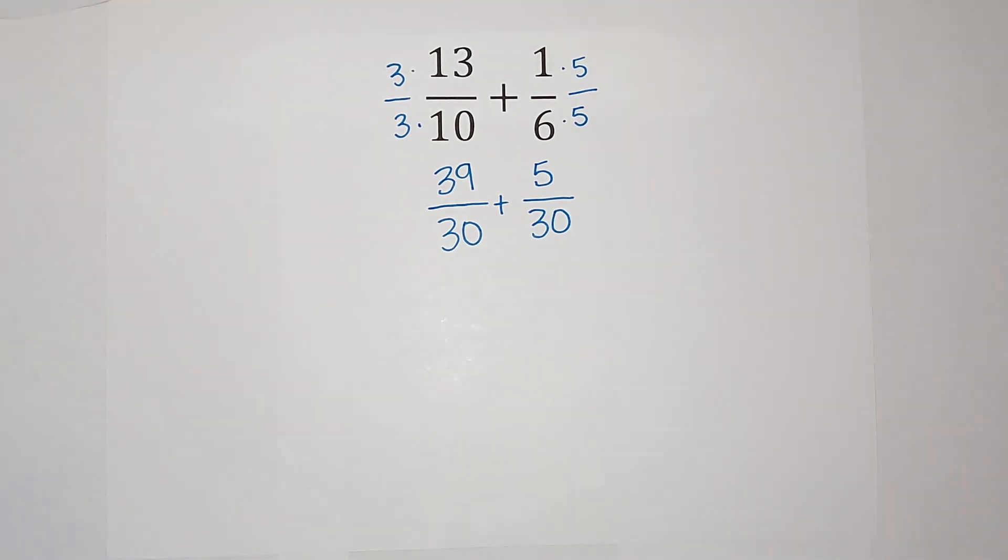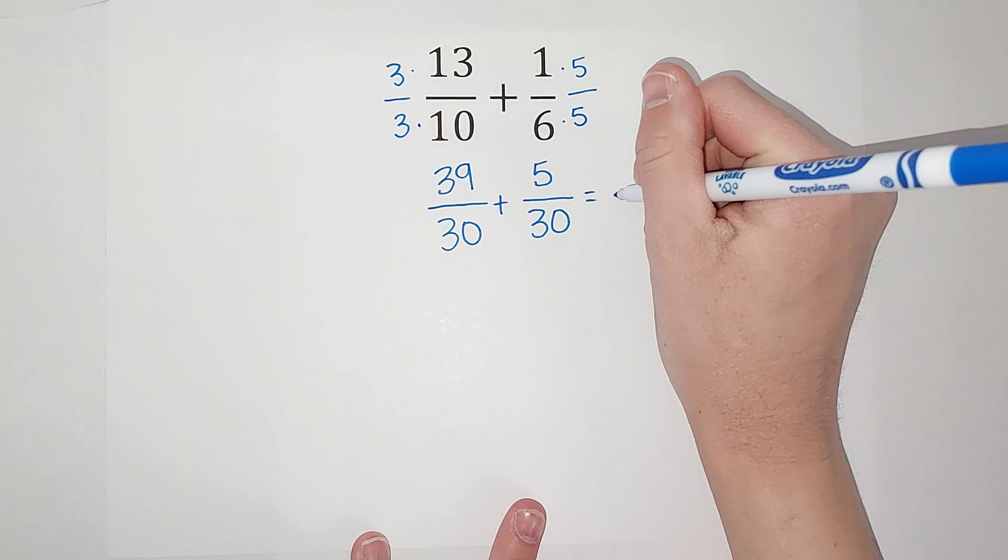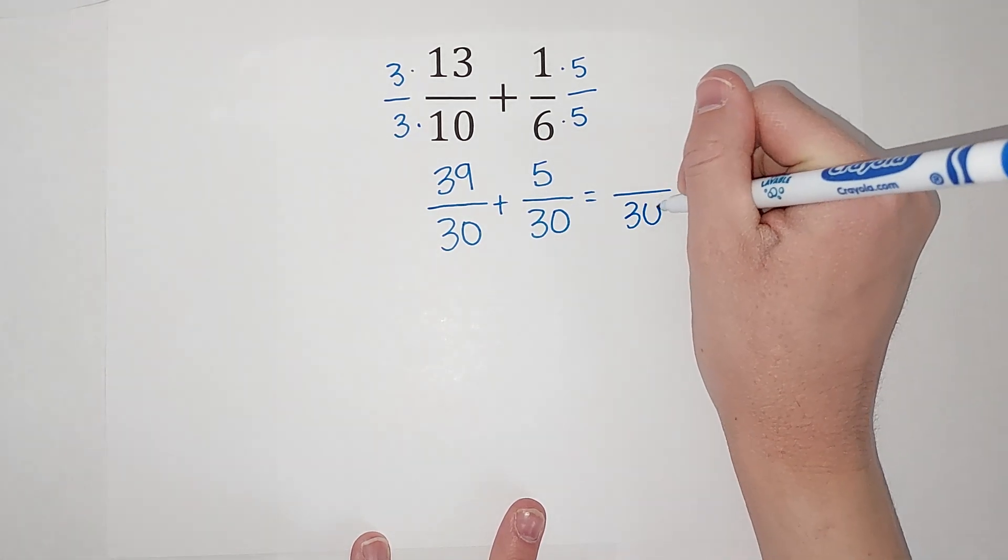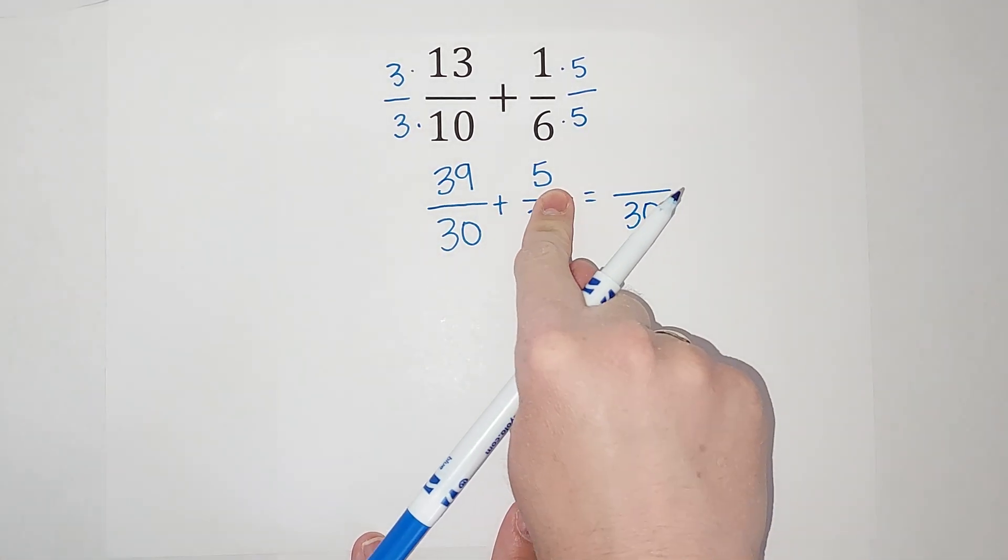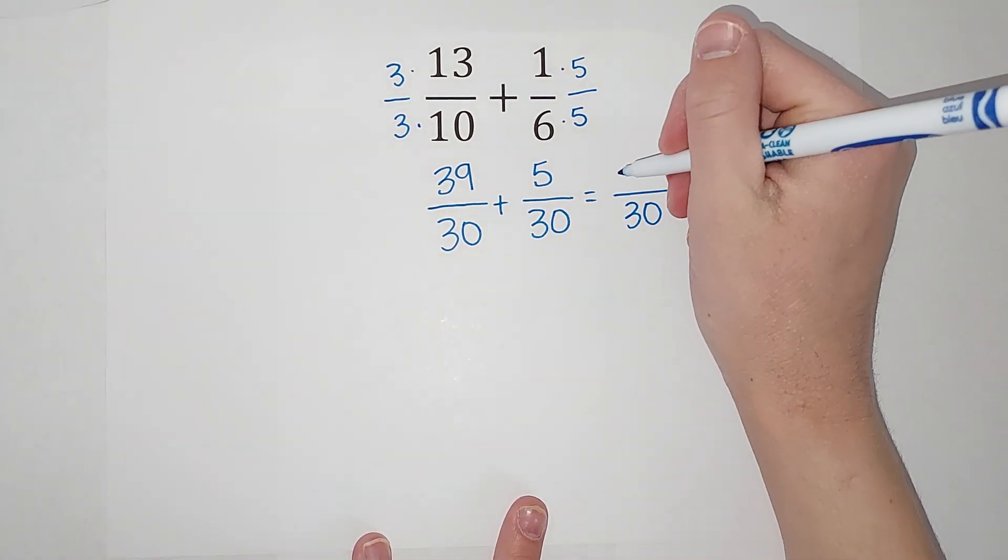Now when I add these, my denominator stays the same—that's why we needed it to be the same—and then I add my numerators. So I get 39 plus 5, which gives me 44.